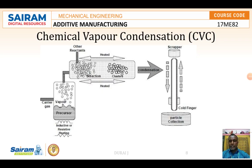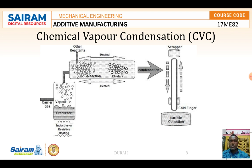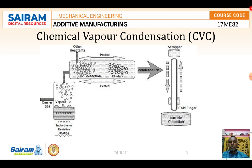Next, we discuss the chemical vapor condensation technique. In this technique, as shown in the figure, the evaporative source used in the gas condensation process is replaced by a hot-wall reactor. Depending upon the process parameters, nucleation and nanoparticle formation — which normally occur as a problem during chemical vapor deposition of thin films — can be controlled to obtain good film quality.